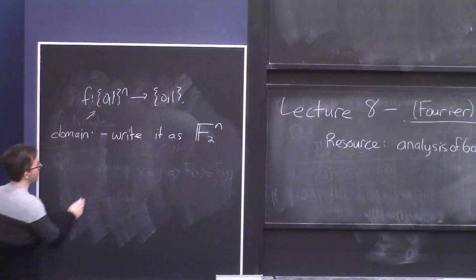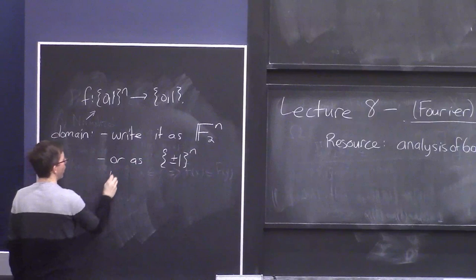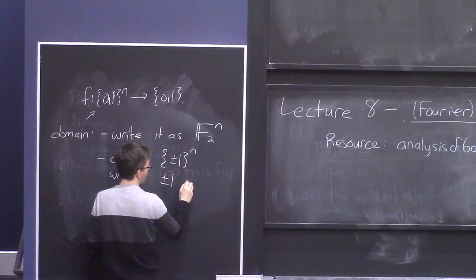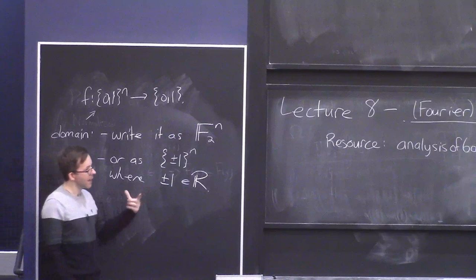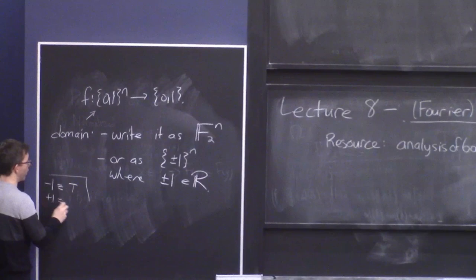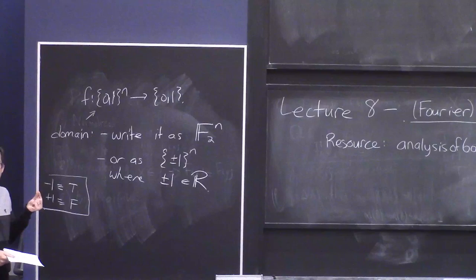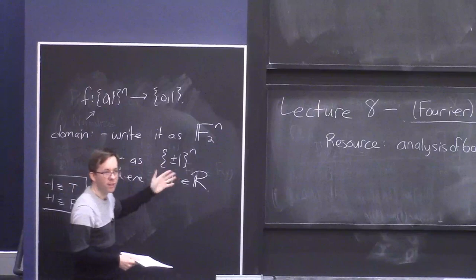Sometimes I'll change my mind and instead use plus or minus one instead of zero and one, where I think of these two numbers as real numbers. It's maybe not so weird to use ±1 instead of 0 and 1 for bits. One reason we'll like to do this is: if you think of −1 as representing true and +1 as representing false, then multiplying becomes the same as XOR. So this will be very convenient.